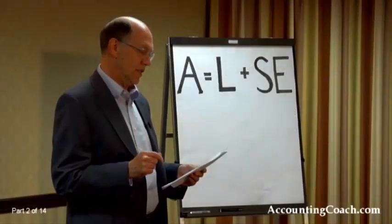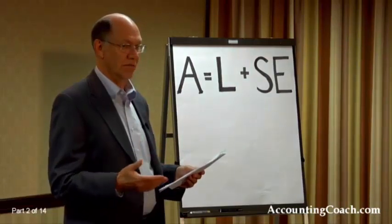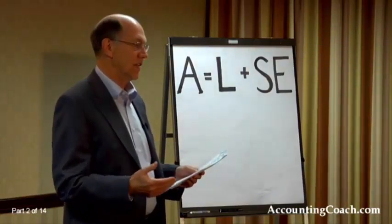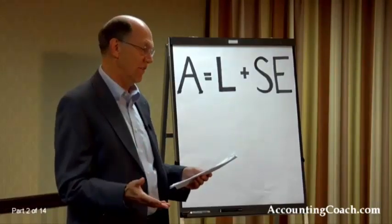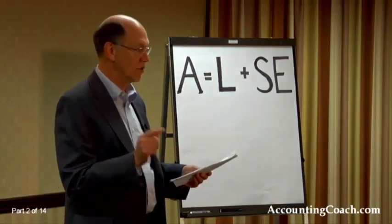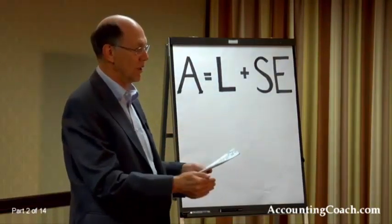The reason we might reduce inventory below cost is that some items might not be turning — they might be obsolete. There's an underlying accounting guideline called conservatism: when doubt exists, use the lower number. So if an item costs $6 per unit but we know we can replace it for $5 today, we should go with $5. We never go above cost for inventory — we use cost or lower.